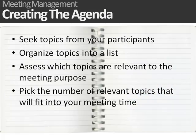Creating the agenda. Creating the agenda can be easy if you know what to do in advance. The SOAP technique helps to collect topics, organise them, and select the ones that will contribute the most to your meeting. First, seek topics from your participants by sending an email asking for agenda topics. Give a brief explanation of the meeting purpose, and ask participants for the time they need to discuss their topic, providing a deadline for submissions.